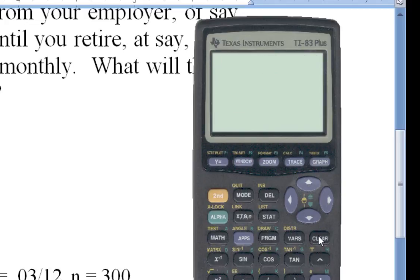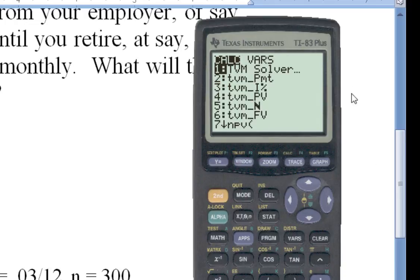Now, let me show you how to compute it another way using a financial program. So in this one, if I hit the apps here, finance, so I hit enter. And I'm going to use the first program, number one there, TVM, stands for time value of money. So I hit enter.